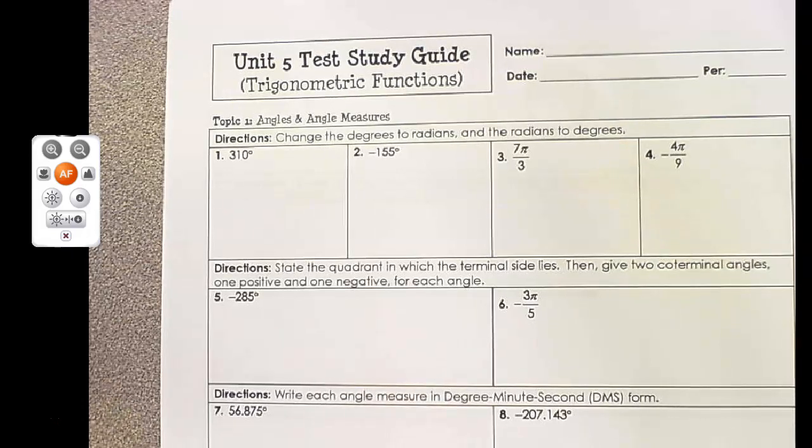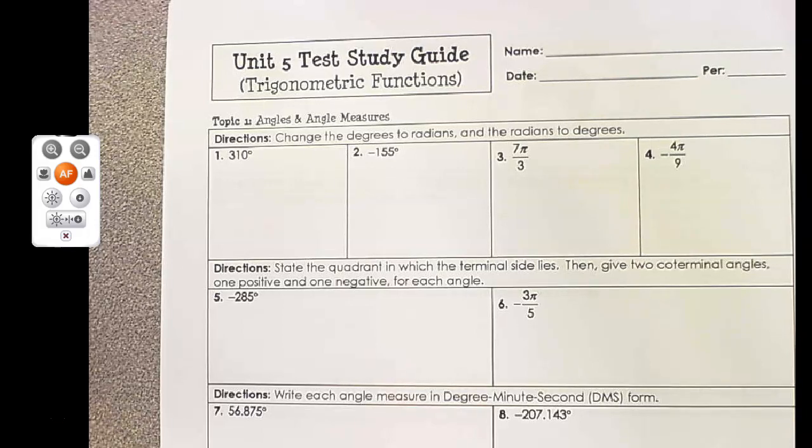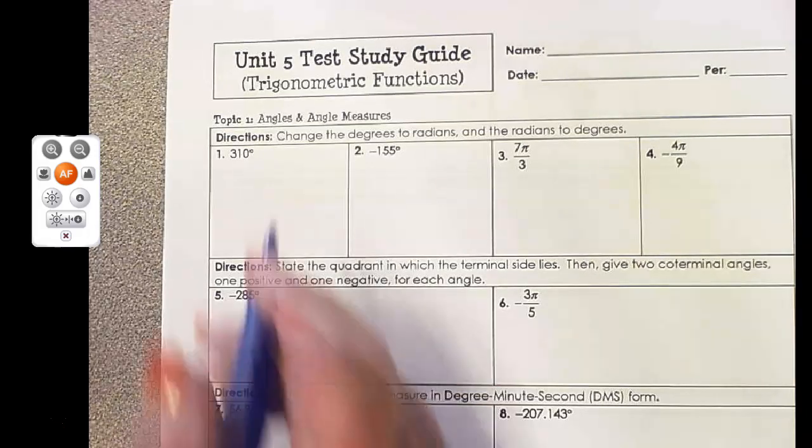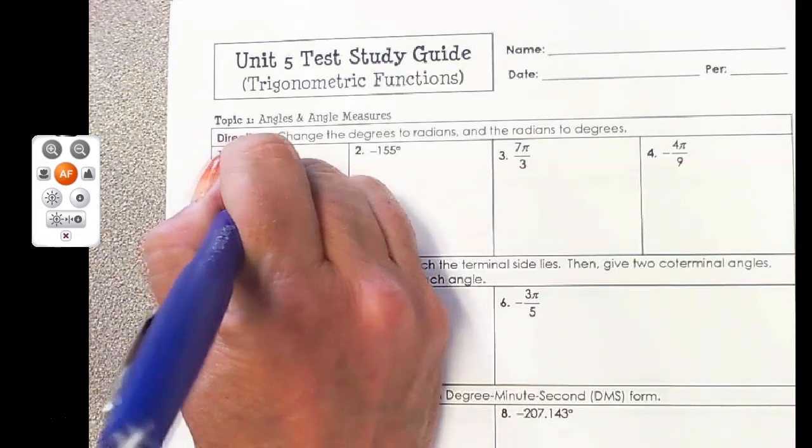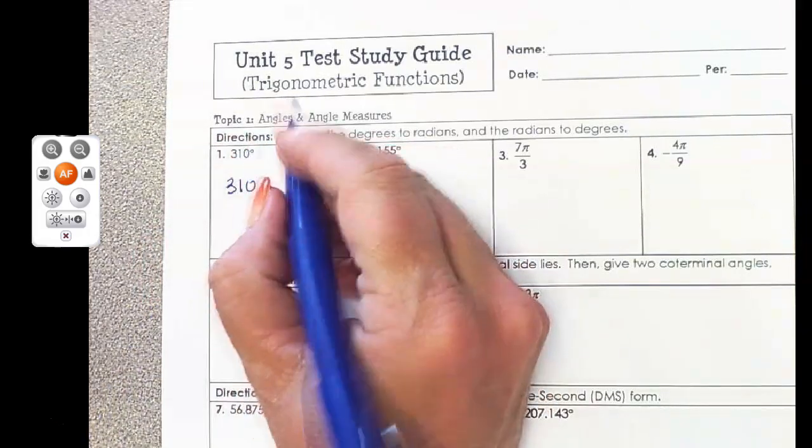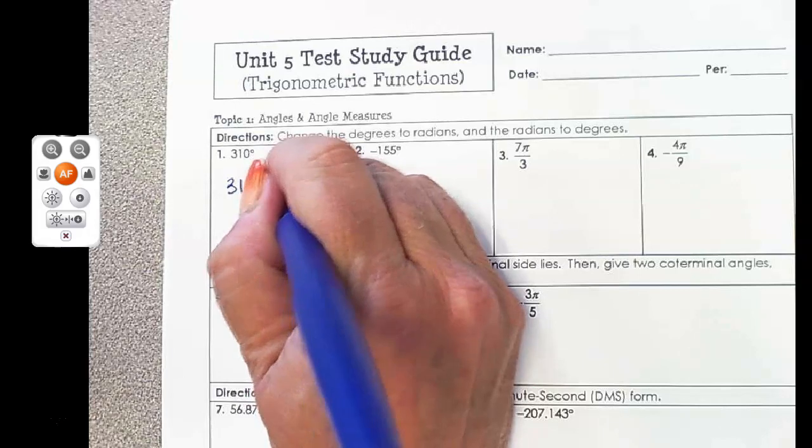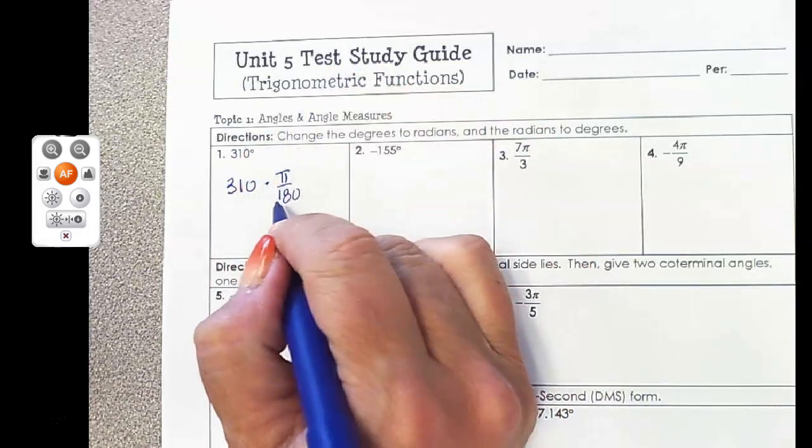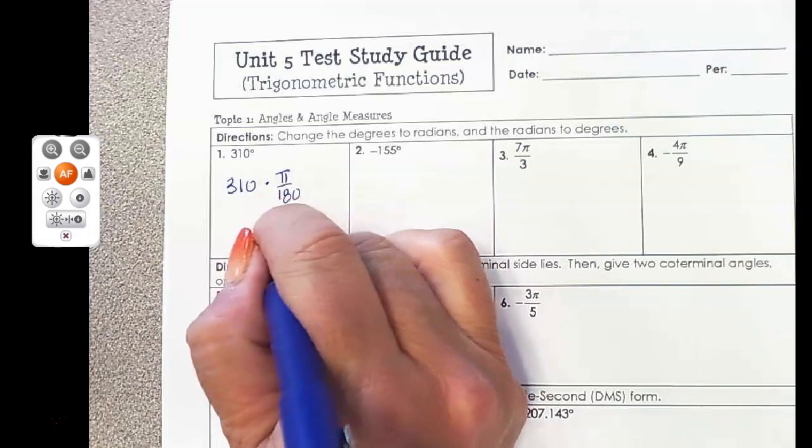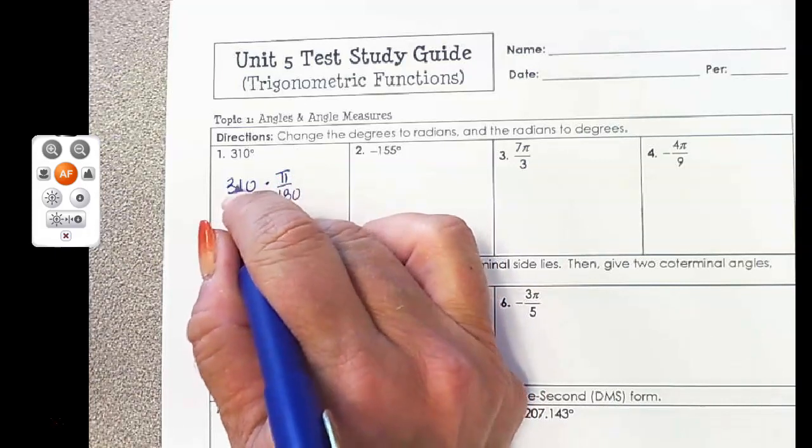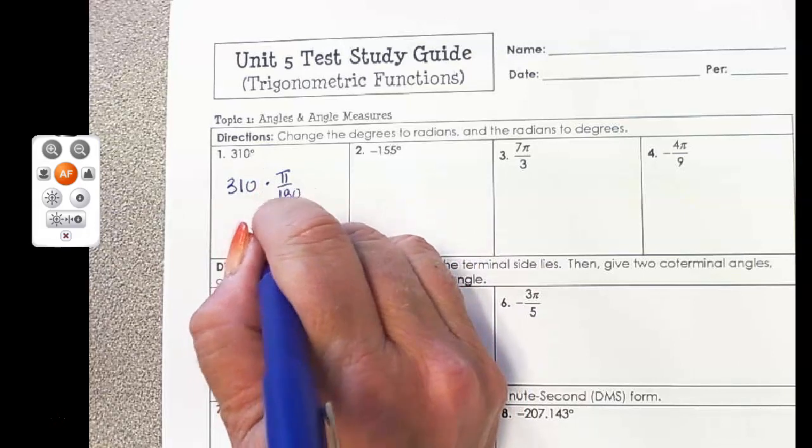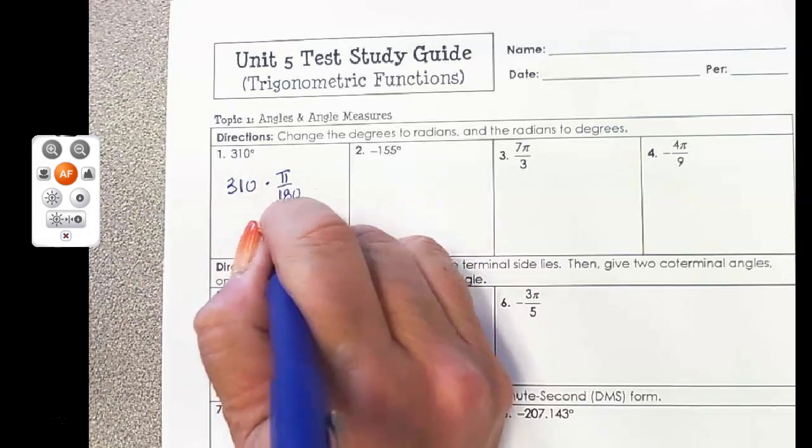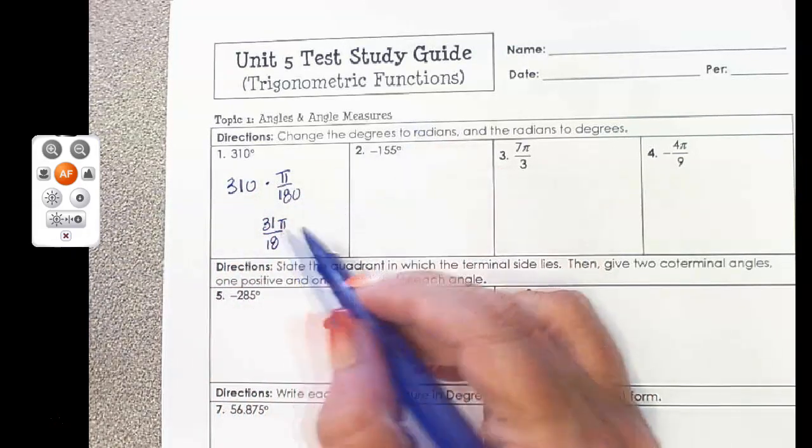So our first skill was changing between radians to degrees and degrees to radians. You just have to know the formula. The formula from degrees to radians is to multiply by π over 180. I'm going to reduce this without a calculator, so that would be 31π over 18. Both are divisible by 10, and we leave the π.